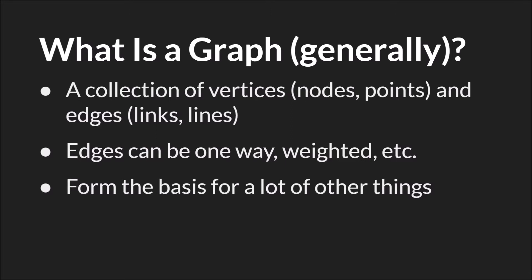A graph generally is a collection of vertices, which can also be called nodes or points, and edges or links. Nodes can have attributes and so can edges. Edges can be one-way or two-way, weighted, and so on. Graphs form the basis for a lot of things.